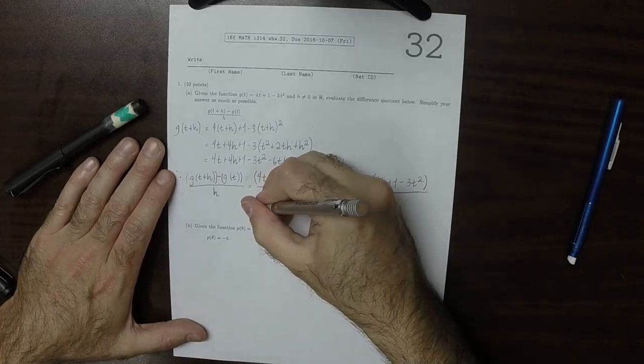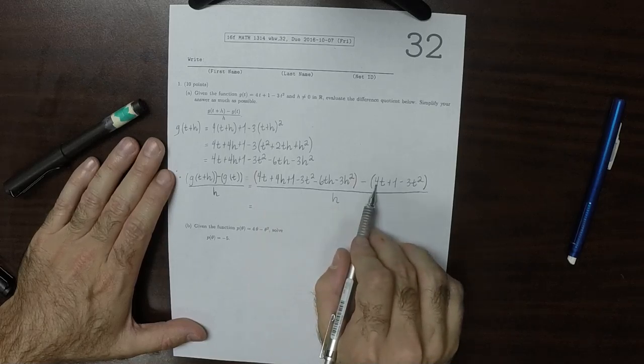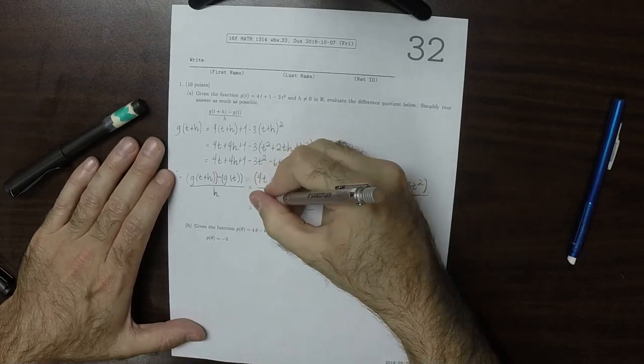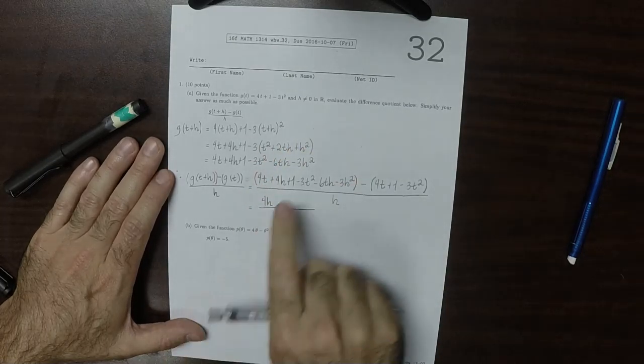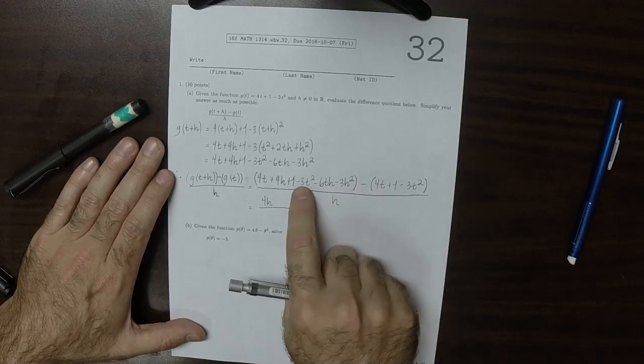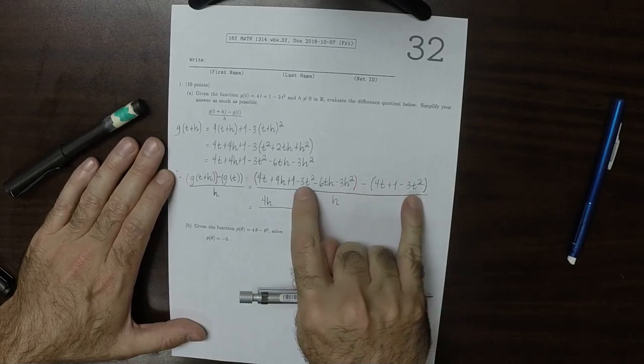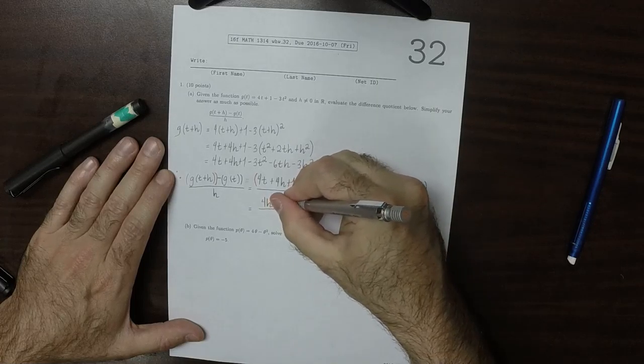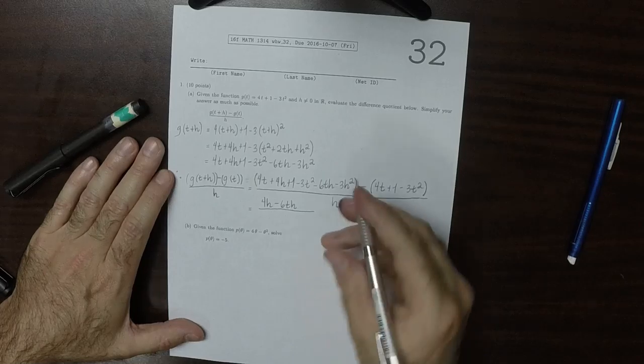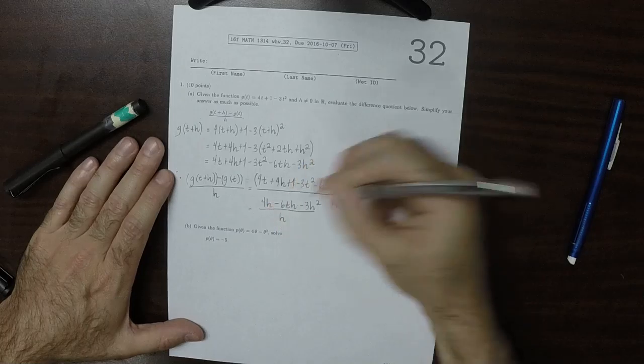Okay, so then doing that, the 4t's cancel, so 4t - 4t. Nothing cancels this 4h, so we get the 4h. 1 is canceled with that 1. Negative 3t², and then we're going to subtract negative 3t². So the negative 3t²s cancel. Nothing cancels that -6th. And then nothing cancels the -3h². This is all over h.